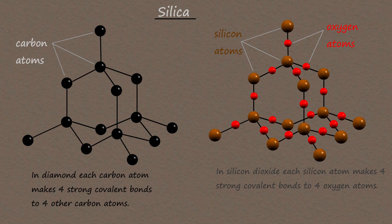In silicon dioxide or silica, each silicon atom makes four strong covalent bonds to oxygen atoms, as shown in the diagram on screen. These bonds are very strong, which means that silicon dioxide will have a high melting point due to the large number of strong covalent bonds that would have to be broken in order to melt it. Like diamond and most covalent substances, it is an electrical insulator, insoluble in water and most solvents.